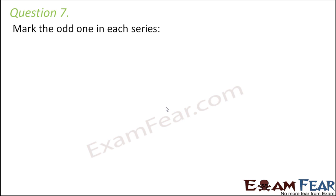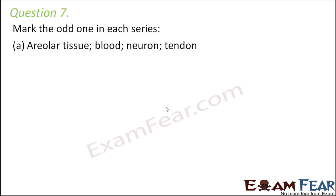Question seven: mark the odd one out. First series — areolar tissue, blood, neuron, tendon. Areolar tissue is connective tissue, blood is connective tissue, tendon is connective tissue, but neuron is part of nervous tissue. Therefore, neuron is the odd one out, as it is not a type of connective tissue.